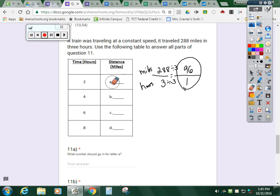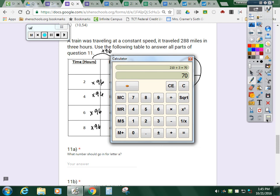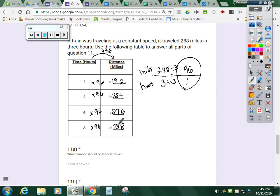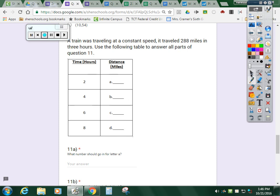Your first number here is two. So you have to times all of your hours by 96 to get your miles. Two times 96 is going to give you 192. Four times 96 is going to give you 384. Six times 96 is going to give you 576. And eight times 96 is going to give you, oh, Mrs. Kramer, I believe it's 768. But let me just double check. Yeah. 768. So these are answers A, B, C, and D. The last one on your quiz.